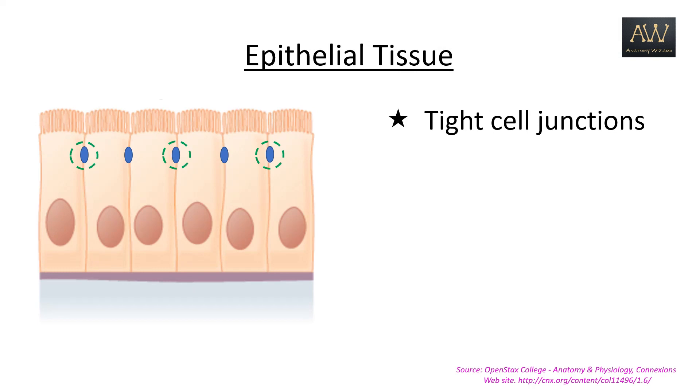Secondly, the epithelial cells exhibit a distinct polarity. This occurs both in terms of the arrangement of the intracellular structures as well as the different surfaces of the cell, namely the apical surface, the lateral surface, and the basal surface.